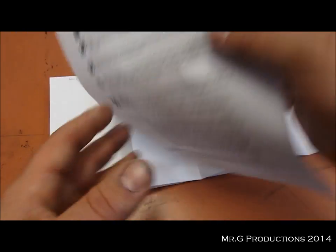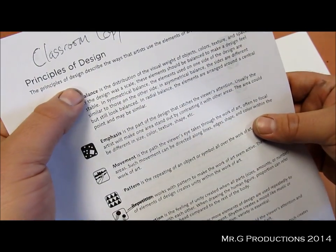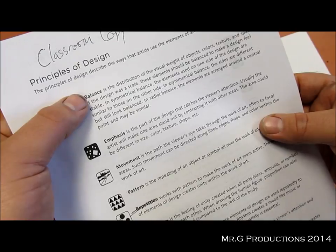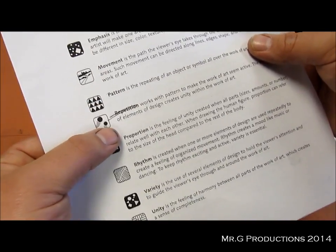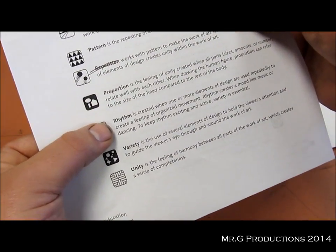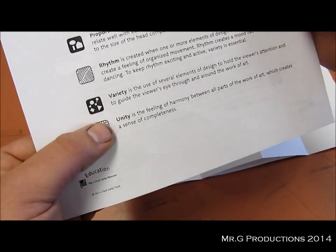On here you've got a number of different terms, starting off with principles of design. Now we have balance, emphasis, movement, pattern, we're going to skip repetition, proportion, rhythm, variety, and unity.